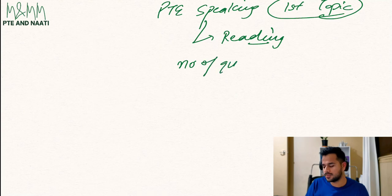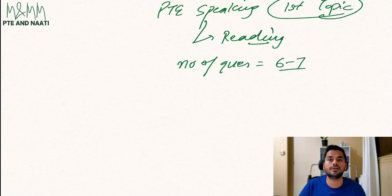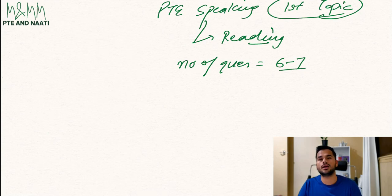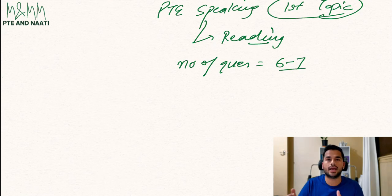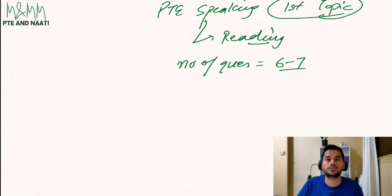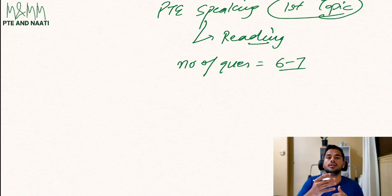In the exam for this particular topic, you can expect either six or seven different questions coming one after another. The topics are not jumbled — they come in sequence. They won't be adding questions from other topics or doing any surprises. If the Read Aloud topic is going on, there would be either six or seven questions coming one after one.